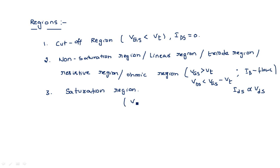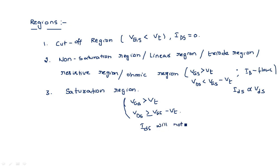In the saturation region, VGS is greater than VT and VDS is greater than or equal to VGS minus VT. In this region, IDS will not increase even if we increase VDS — the current IDS comes into saturation.